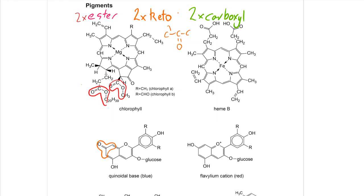One here... and one there. And the carboxyl group — well, the class is carboxylic acid, but this functional group is the carboxyl group, and there are two of those. There's one, and there is the other.